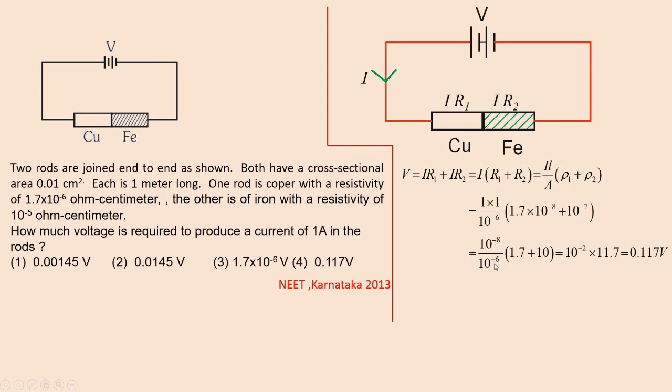So on simplification, this gives you 10⁻². This is 1.7 + 10 = 11.7. So 10⁻² × 11.7 = 0.117 volt.